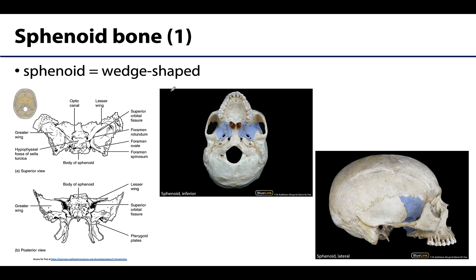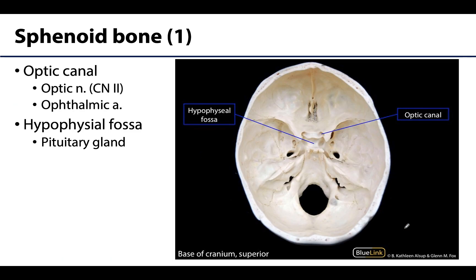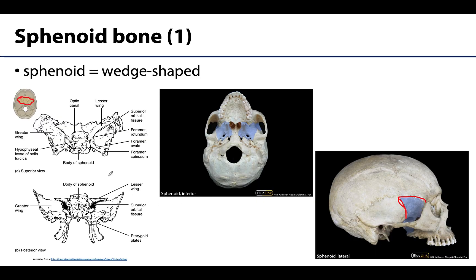Also high on my list of favorite bones: the sphenoid. It's a beautifully butterfly-shaped bone visible in the basacranium view, inferiorly, and in external views. It is unpaired — just one sphenoid, sitting roughly in the middle. There are many foramina associated with the sphenoid bone.